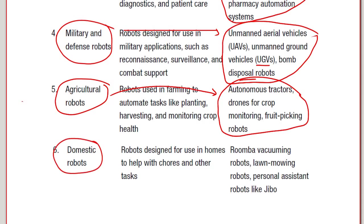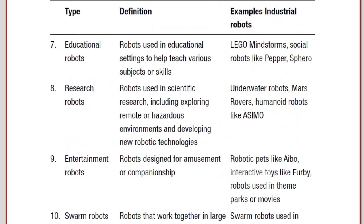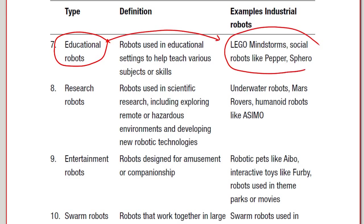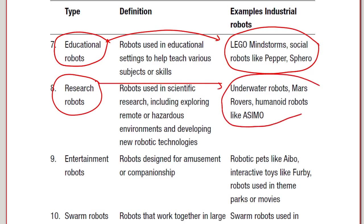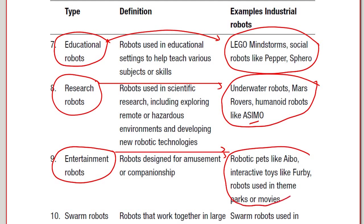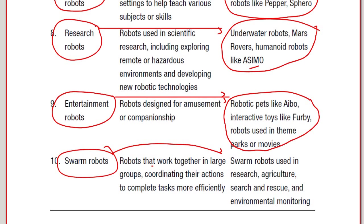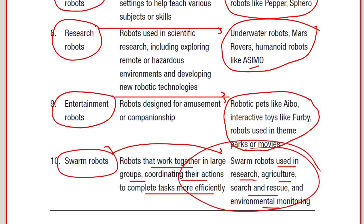We also have educational robots like Lego Mindstorm, and social robots like Pepper and Sphero. Research robots include underwater robots, Mars rovers and humanoid robots like ASIMO. Entertainment robots include robotic pets like Aibo, interactive toys like Furby, and robots used in theme parks or movies. Finally, swarm robots work together in large groups, coordinating their actions to complete tasks more efficiently — these are used in research, agriculture, search and rescue and environmental monitoring.